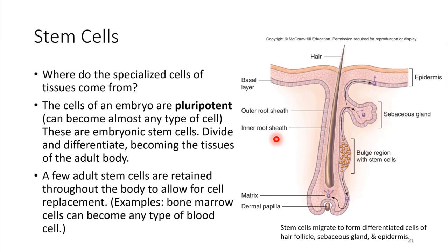In the case of the epidermis, deep in the layers of the epidermis there are some spots where stem cells can reside — they just kind of hang out until they're needed. As cells flake off the top, these stem cells migrate towards the surface and differentiate to become whatever cell type is needed at that location. It's really amazing the way that cells can replace themselves, in large part due to the stem cells that are present.